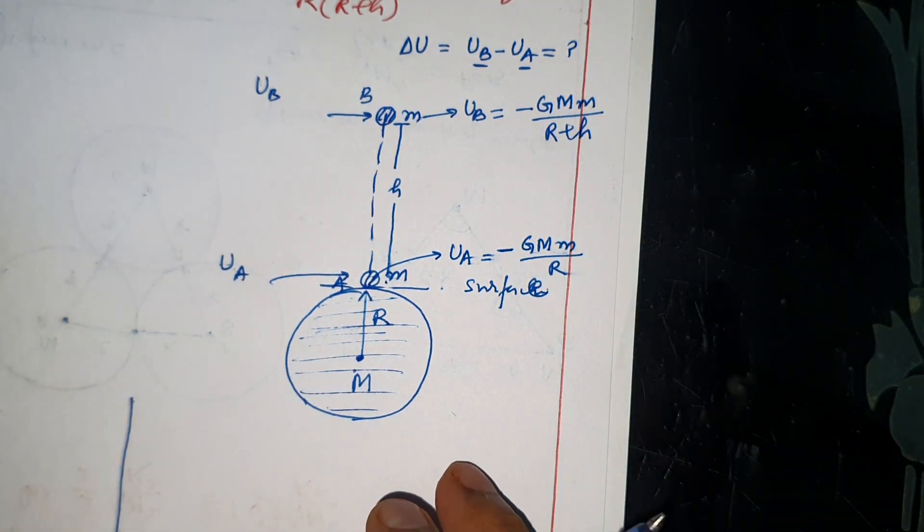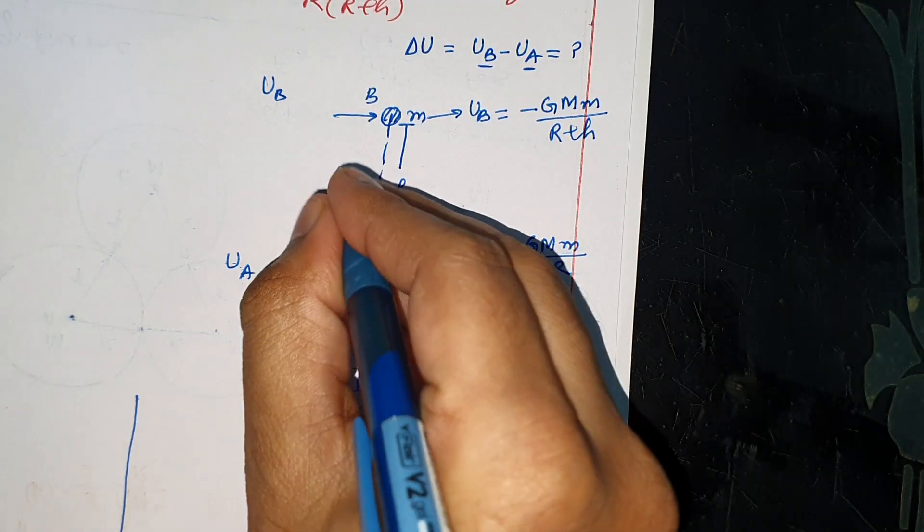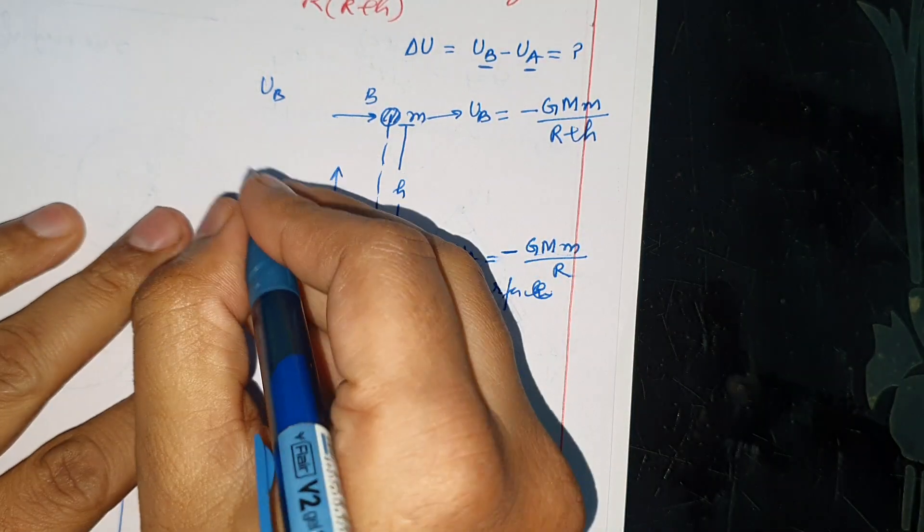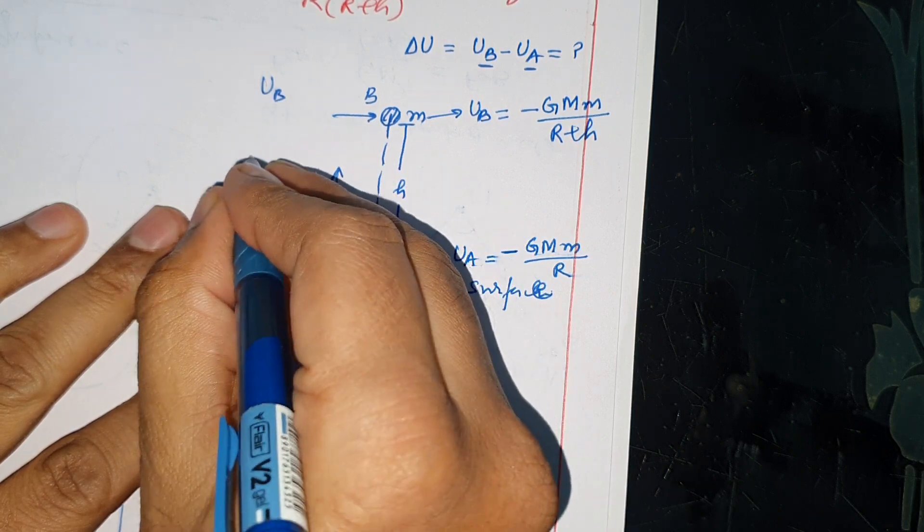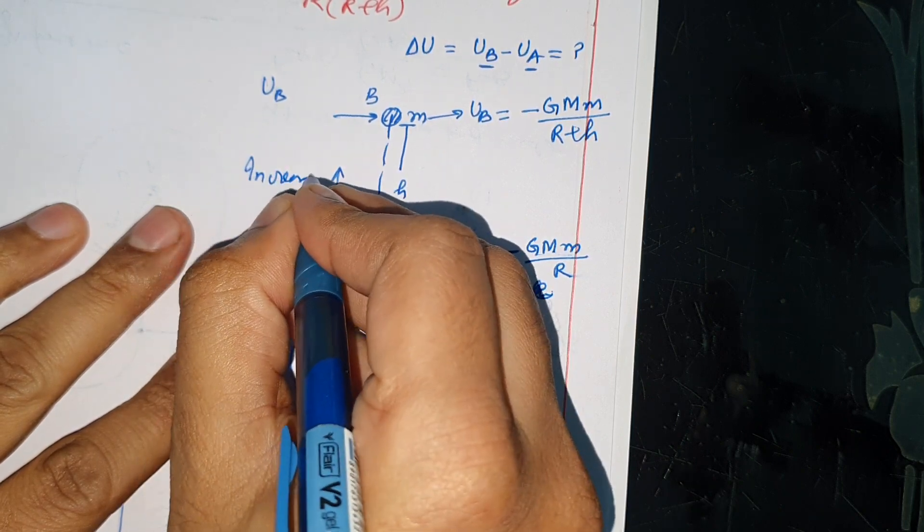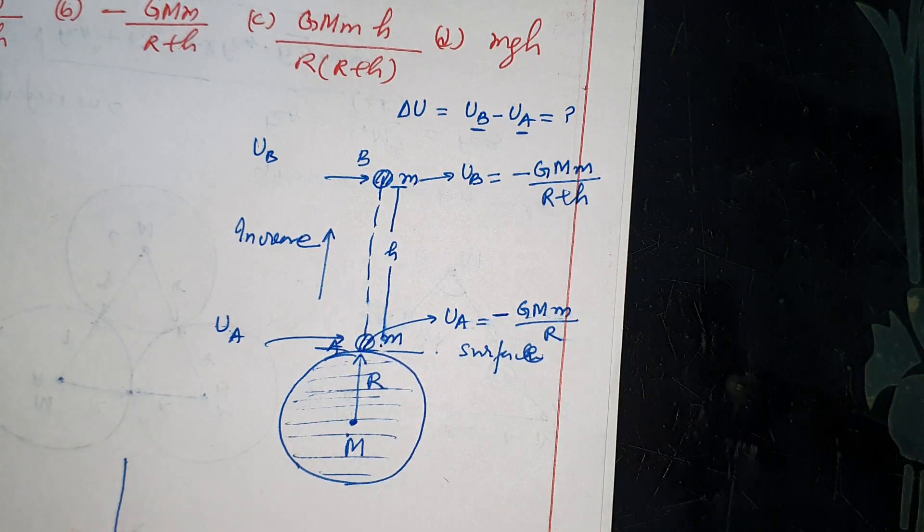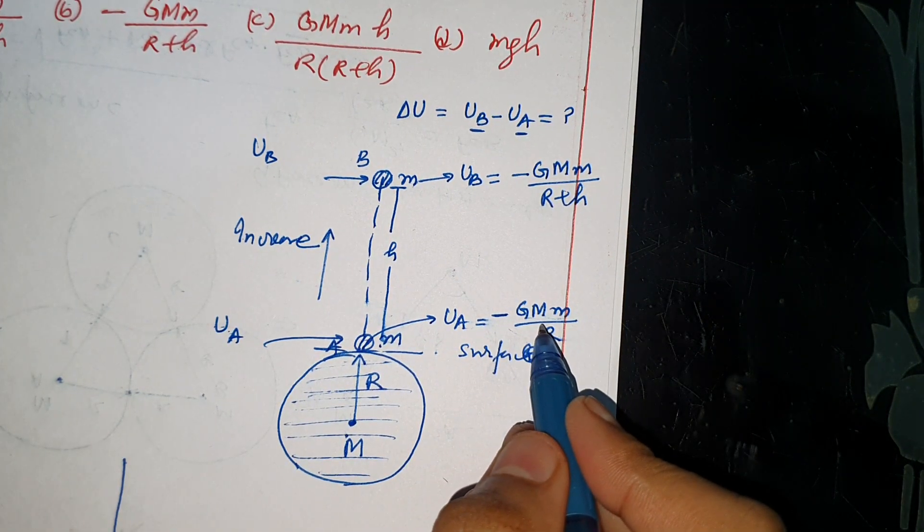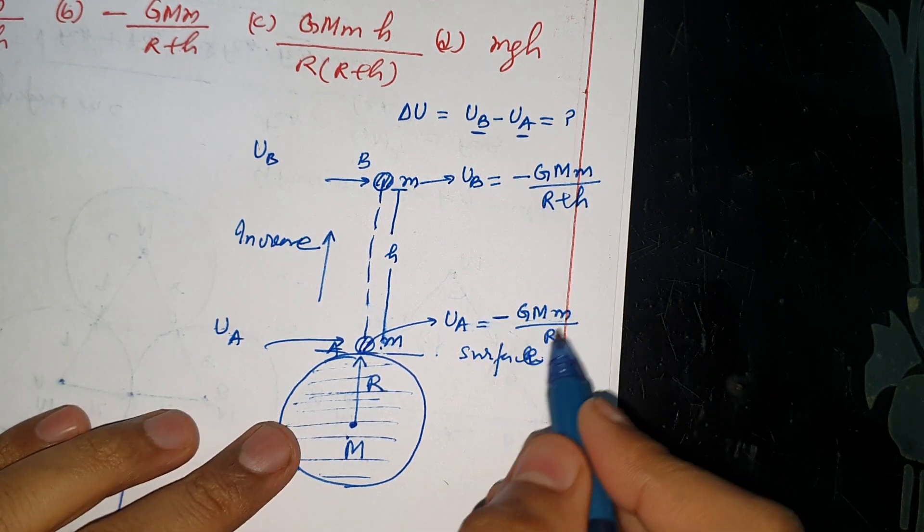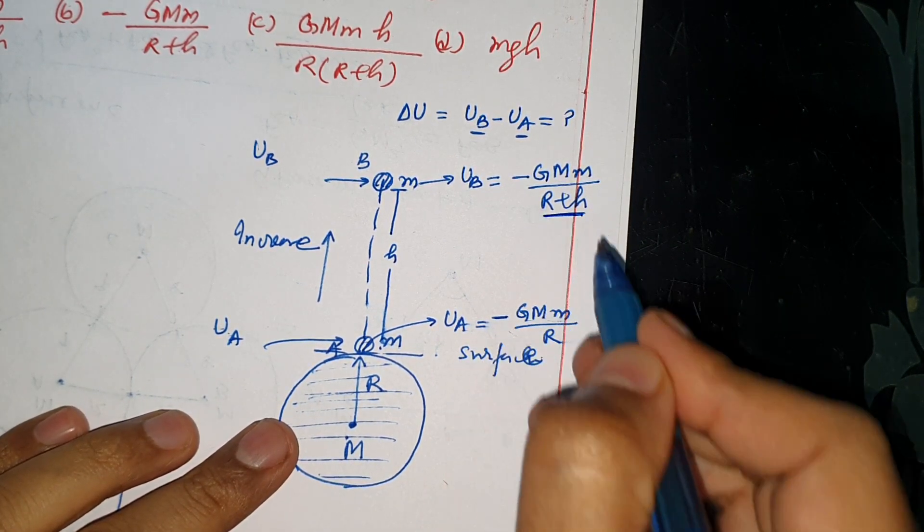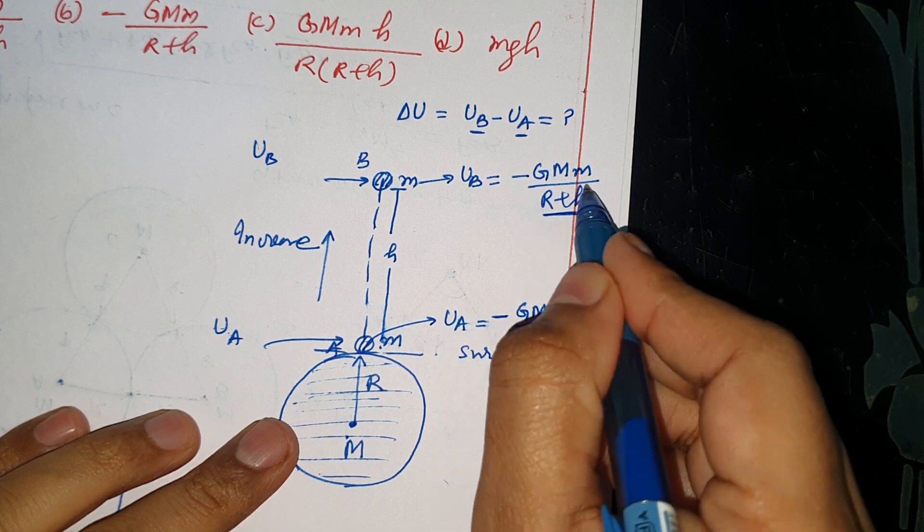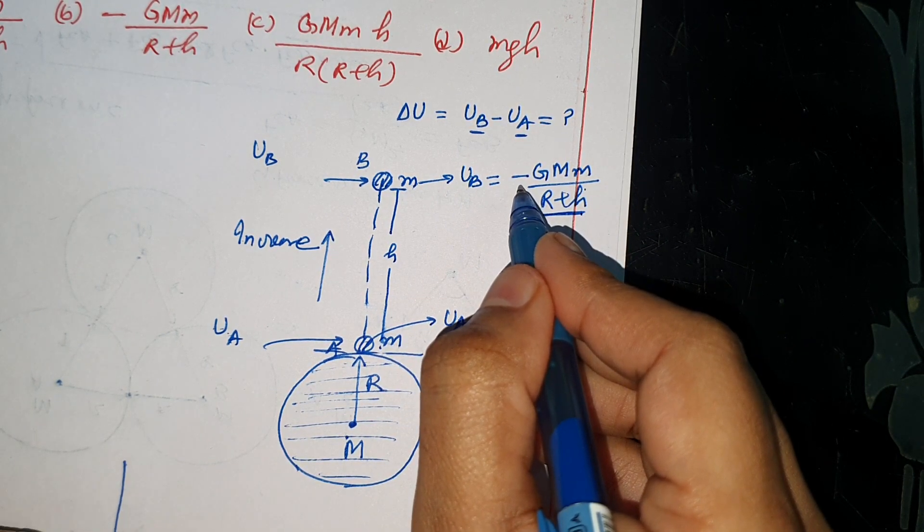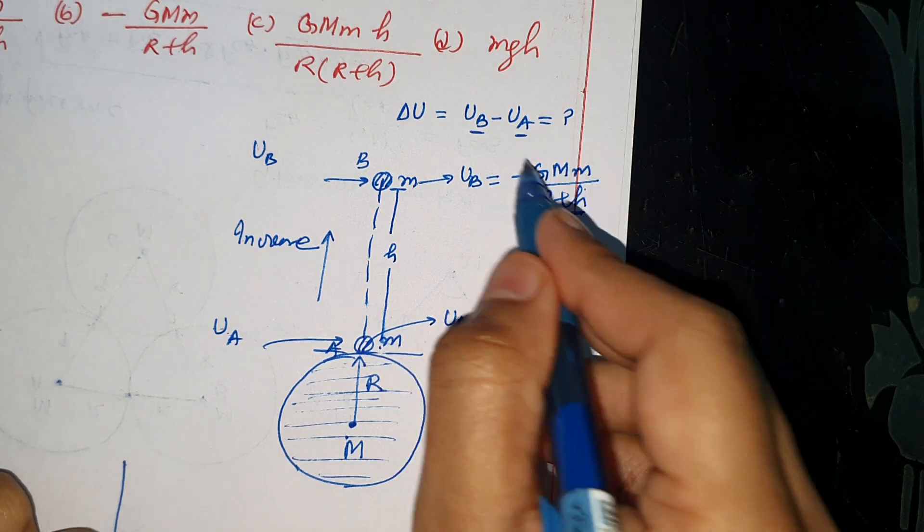So gravitational potential energy increases or decreases when going upward? Think and tell. It's increasing. Going upward, gravitational potential energy is increasing because at infinity it's zero. This is the most negative value. At infinity it's zero.